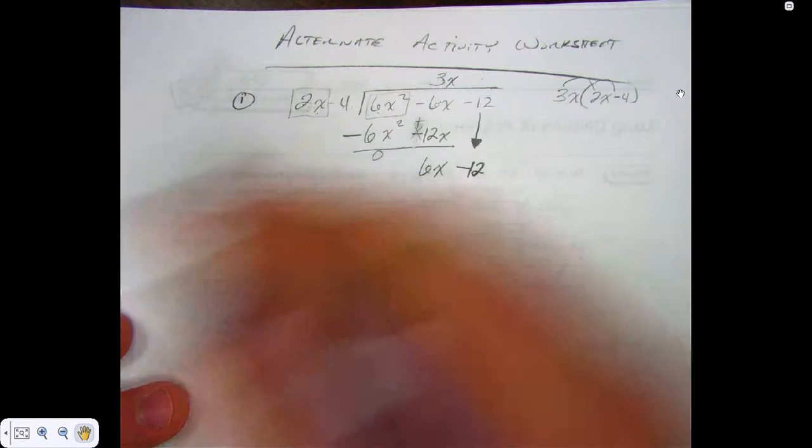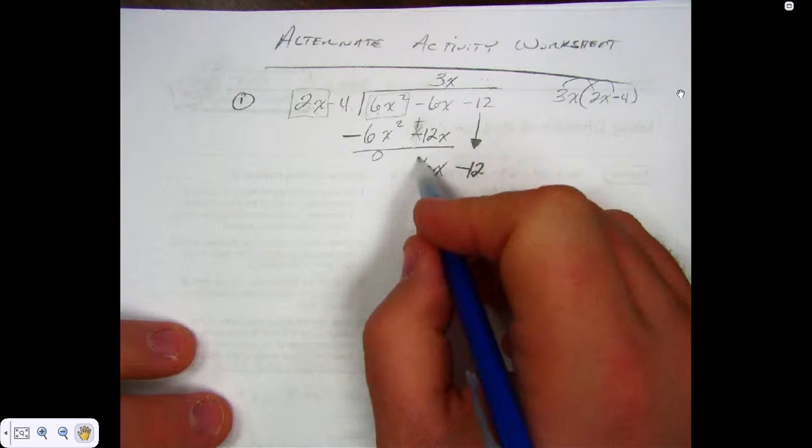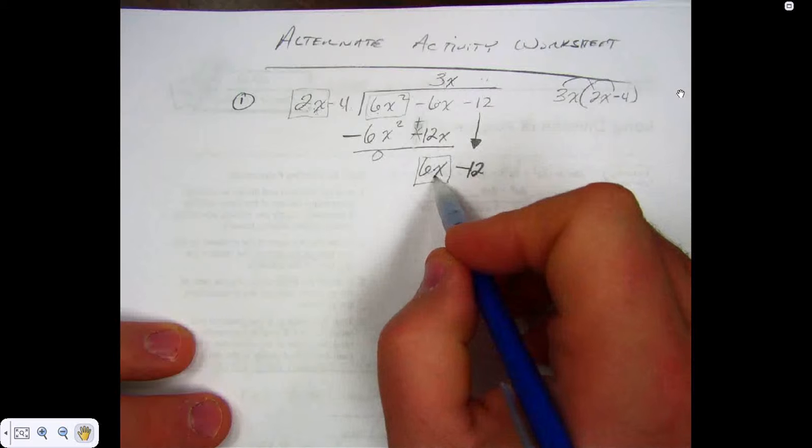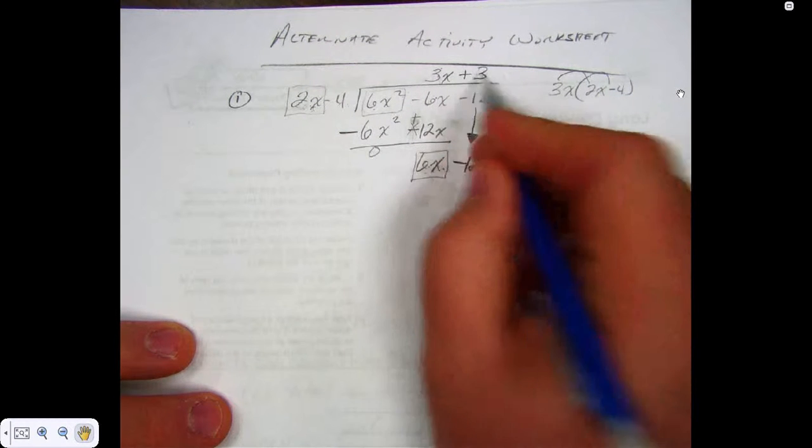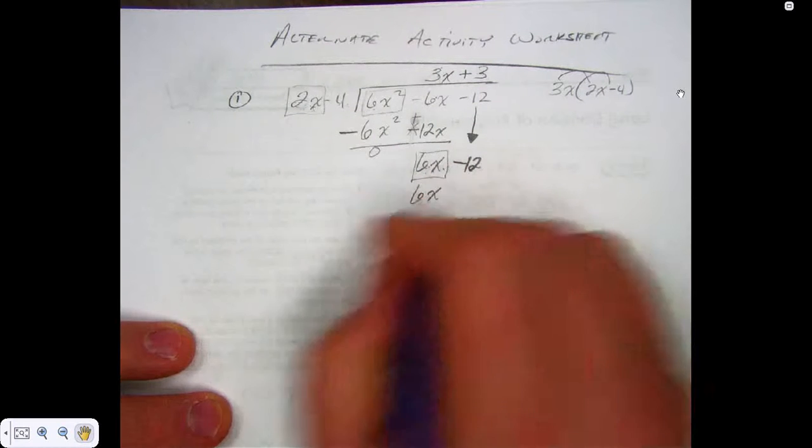Now, once again, what I put here, what do I look at? What term? The first terms. First term there, first term there. 2x times what will give me 6x? 3. So it's a positive 3, so I'm going to put plus 3. 2 times 3 is 6, and then I have to bring the x along, don't I?